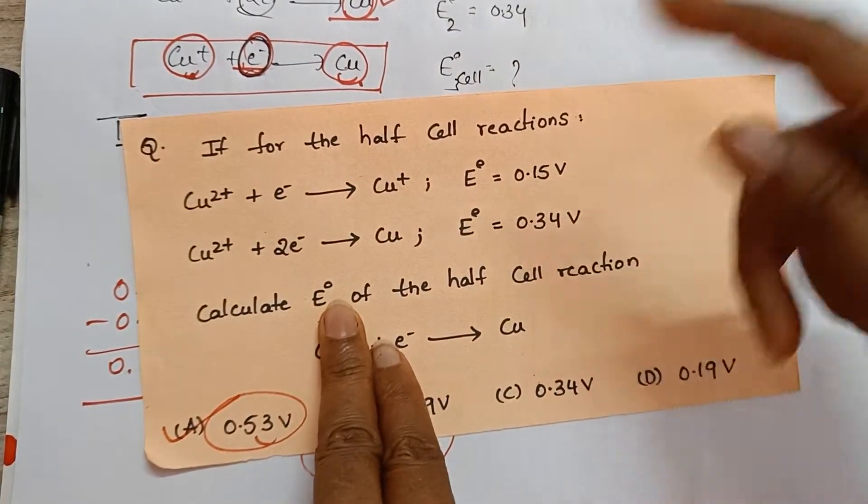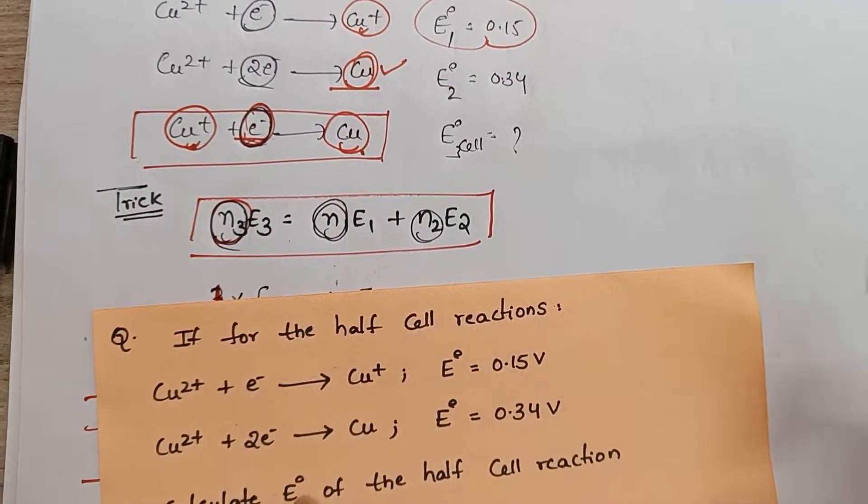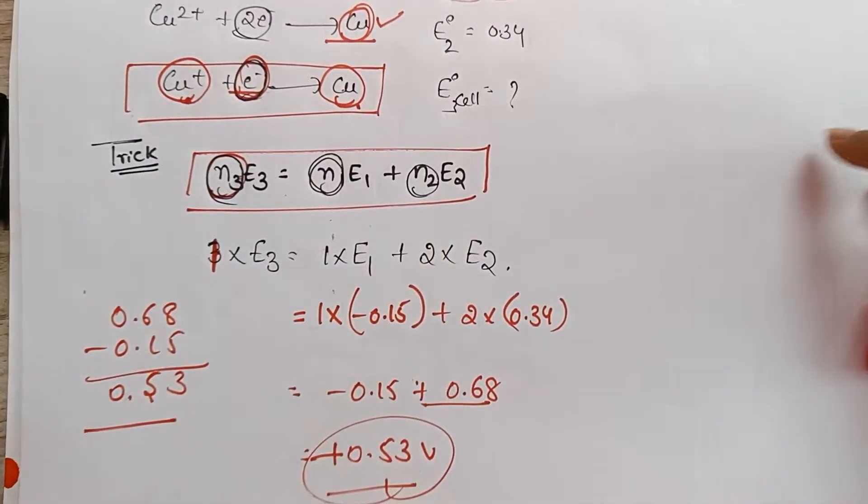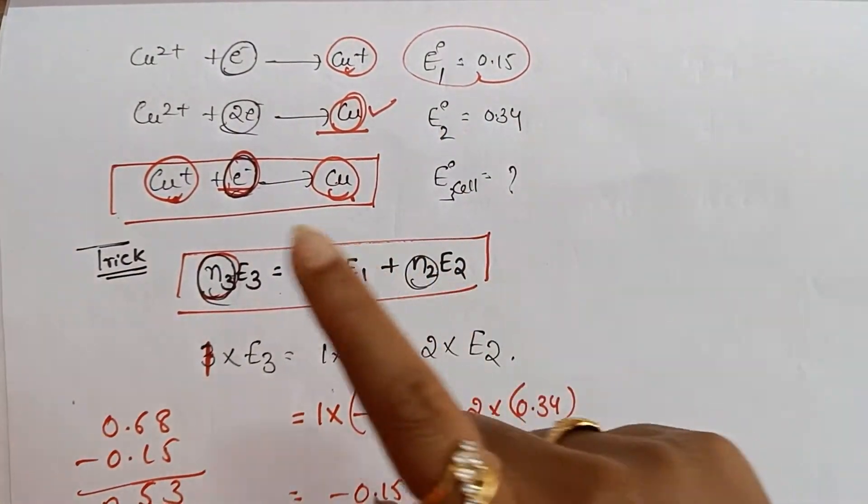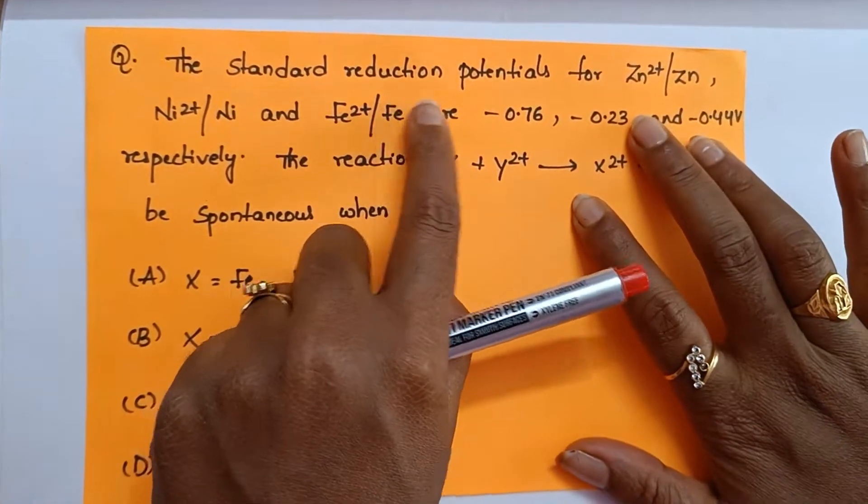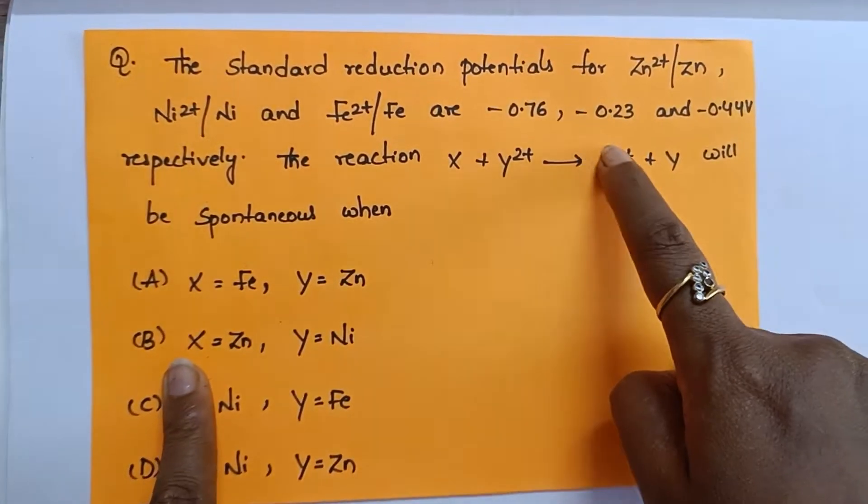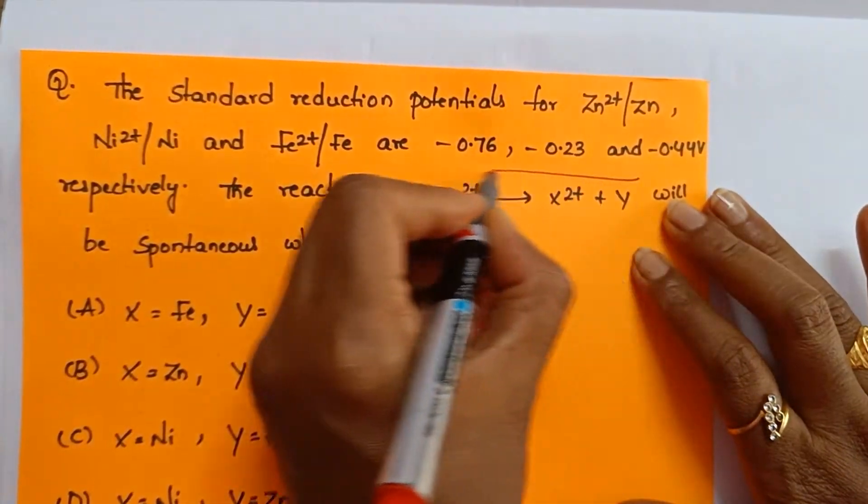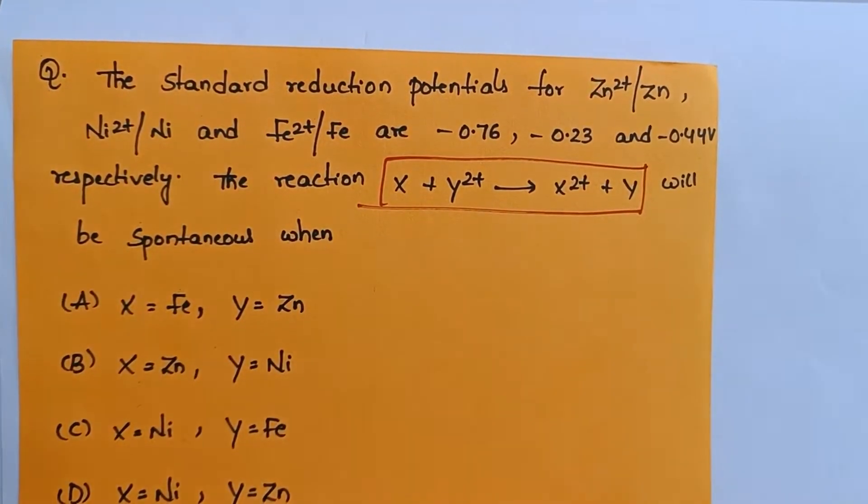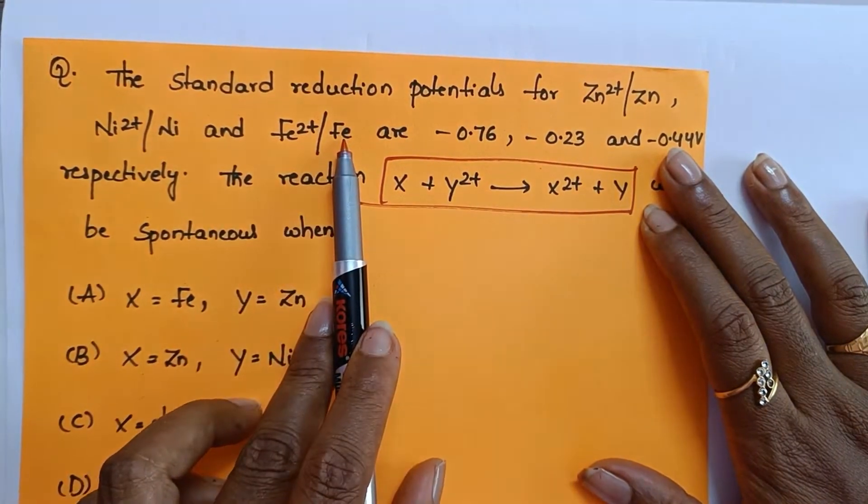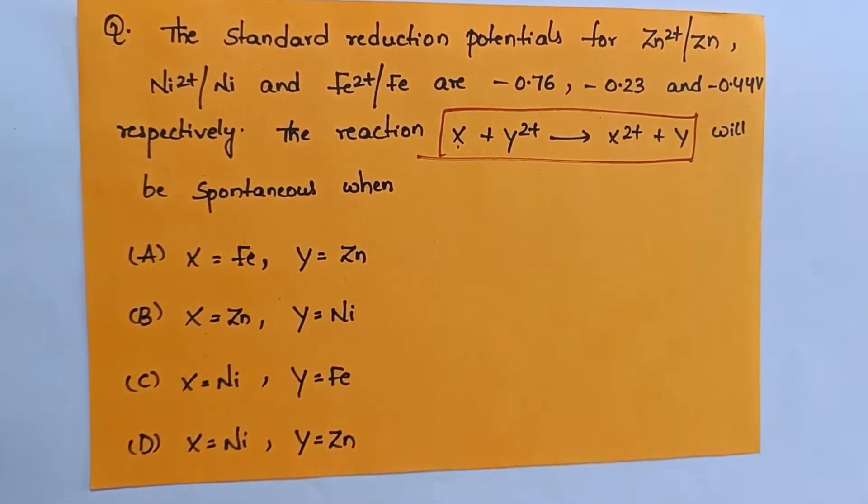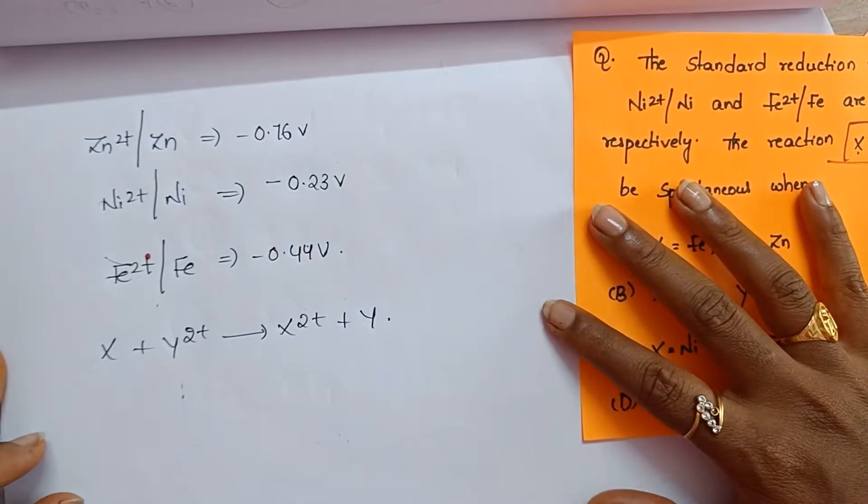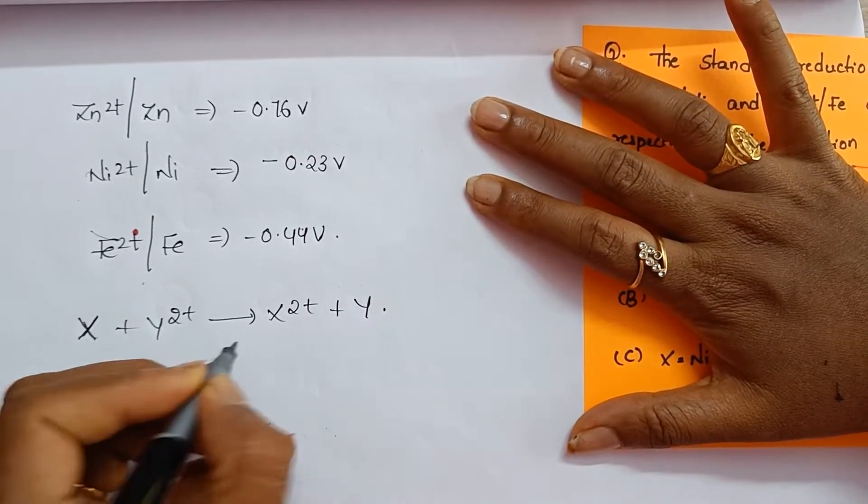Usually you solve this one by using the formula delta G. Delta G is equal to minus NFE cell. You use that formula normally. But this is the trick you can do quickly. Any question which if you see two equations they have given for third equation they are asking, use this formula. Nice trick. See the next one. The standard reduction potentials they have given for three cells and they were asking for this particular reaction, whether this reaction is spontaneous or not. If X is Fe, if Y is Zn, then the reaction is possible or not. How to find this reaction? First I will write the data here.